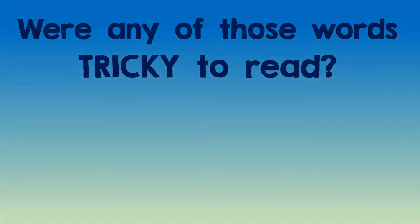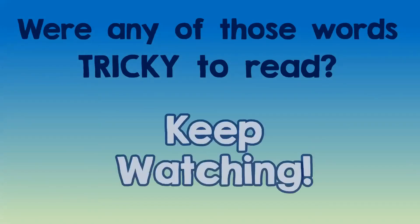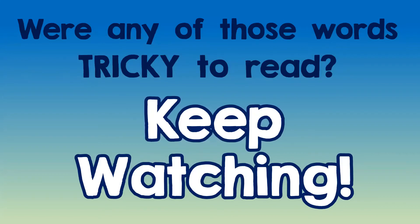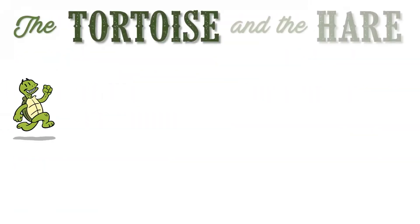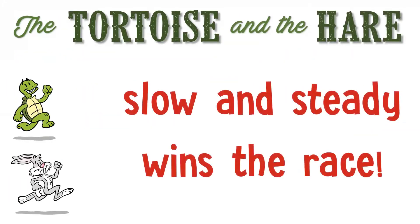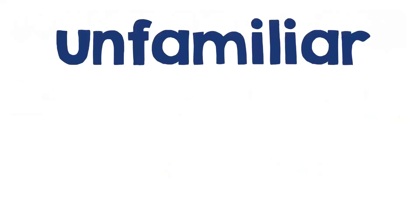All right, were any of those words tricky to read? Keep watching if so. In this episode, I'm going to review these four words from that passage I just showed you. I'm going to show you some information and some strategies you might want to recall next time you're stuck on words like those when you're reading independently. First, a reminder of the fable of the tortoise and the hare, and the moral: slow and steady wins the race, which is great advice when you get stuck on big unfamiliar words.